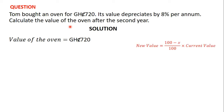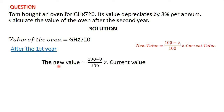We learnt that if the value of an item depreciates by X percent, then the new value is equal to (100 minus X) divided by 100, times the current value. Applying that here: after the first year, the new value of the oven is (100 minus 8), which is 92, divided by 100, times the current value of 720 Ghana cedis.